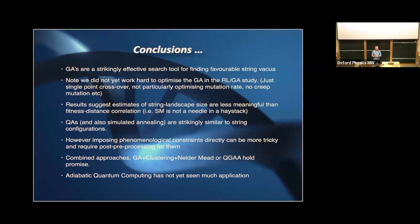Question: Do you have any intuition for why that leaping behavior happens in genetic quantum annealing — is it some sort of phase transition? It could be something like that — it does appear to look a bit like a phase transition — but the short answer is we don't know why it's doing that, and we basically just need to do more work on it.